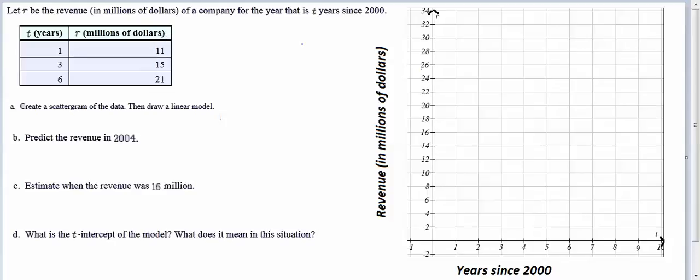The first thing we're asked to do is create a scattergram of the data and then draw a linear model. We've got our coordinate plane all set up here. To create that scattergram we're first going to need to graph the ordered pairs that we're given.